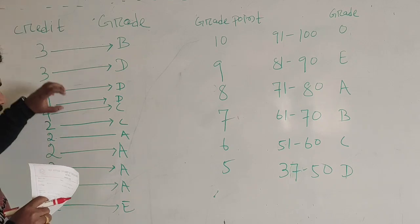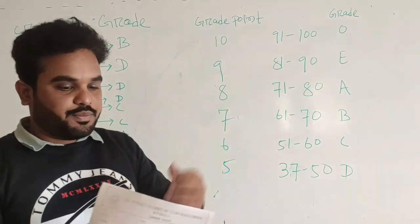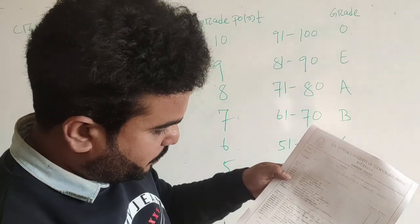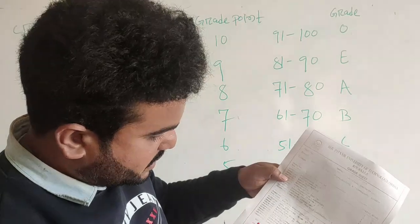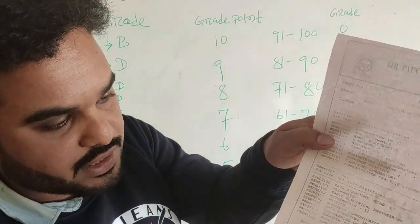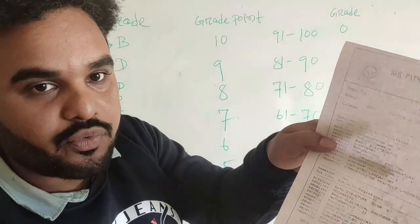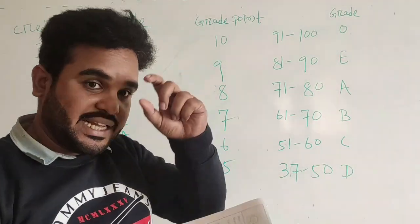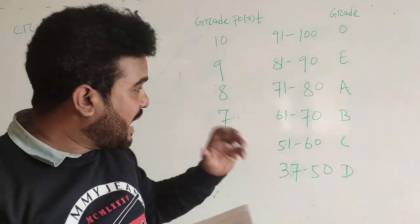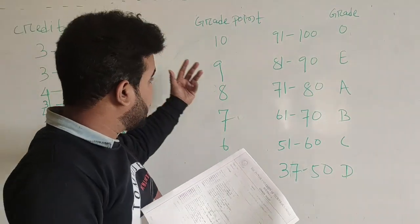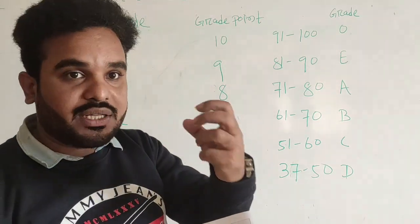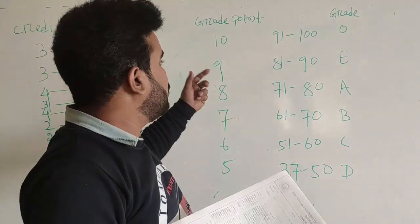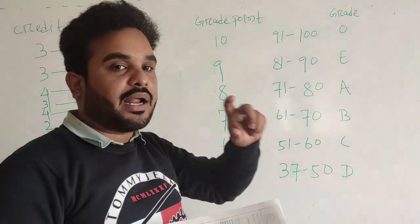So we will calculate the SGP first. You can see here clearly SGP is 6.43. Now we will calculate manually. There is a grade point you can calculate, but I will tell the method — how you can calculate the SGP. It will be easy whenever we calculate it manually.